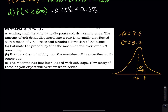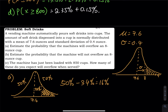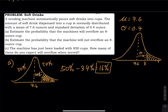To overflow an 8-ounce cup, the machine must pour more than 8 ounces. We need the area to the right of 8. Starting with 50% on the right side of the mean, we subtract the 34% between mu and mu + σ, giving 50 - 34 = 16%. So the probability of overflow is 16%.